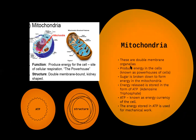To revise mitochondria: these are double-membranous organelles that produce energy in the cell — that is why they are called the powerhouse of the cell. Sugar is broken down to form energy in the mitochondria, and this energy is stored as ATP, which stands for adenosine triphosphate. ATP is the energy currency of the cell and is used for mechanical work. The outer membrane is porous while the inner membrane has enfoldings called cristae.